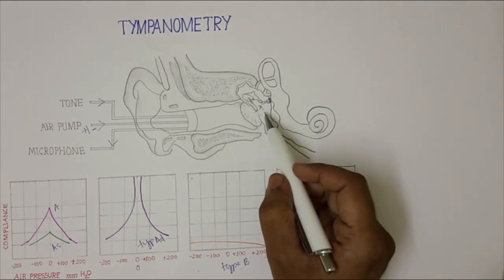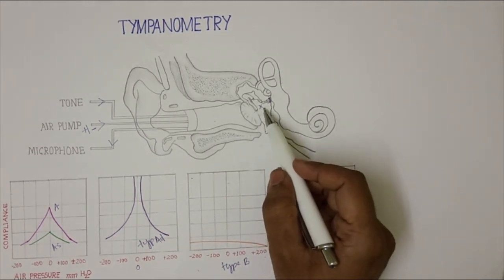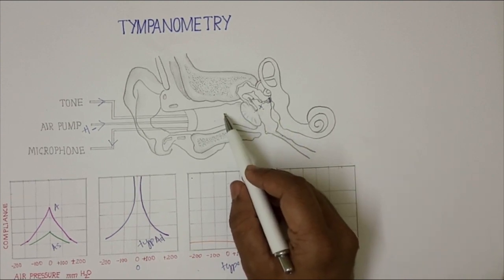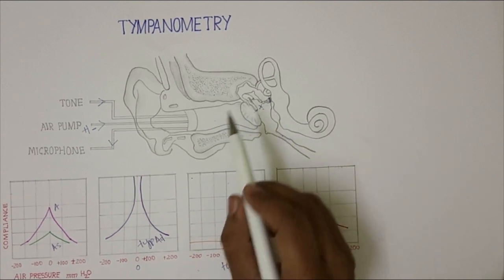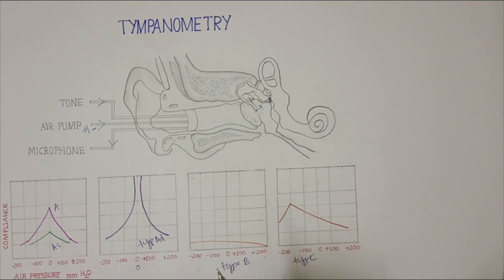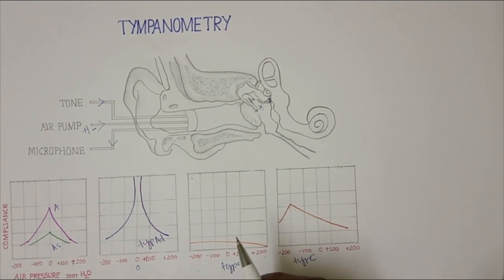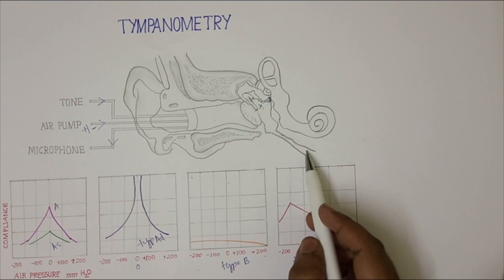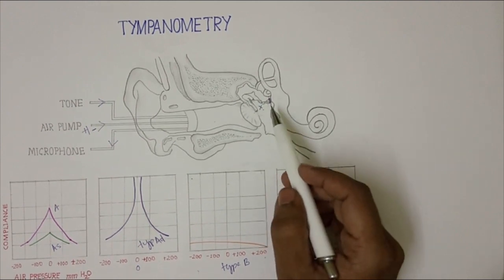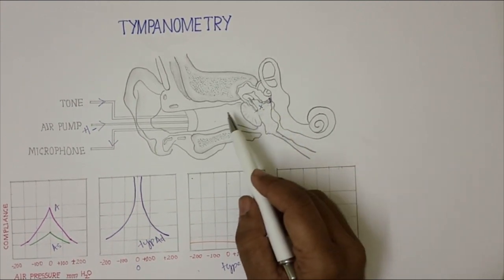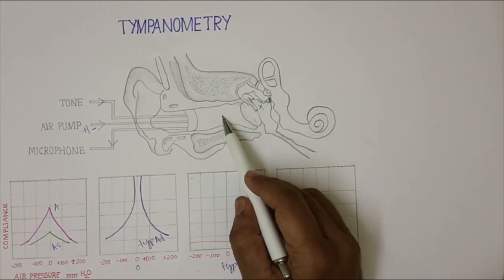When the middle ear pressure is equal to the external otric canal pressure, the tympanic membrane is vibrating to its maximum extent. As you know, the Eustachian tube equalizes the pressure of the middle ear to that of the external otric canal.